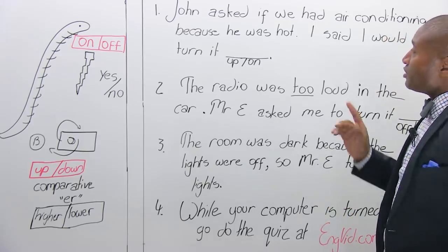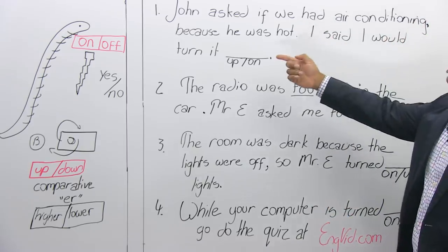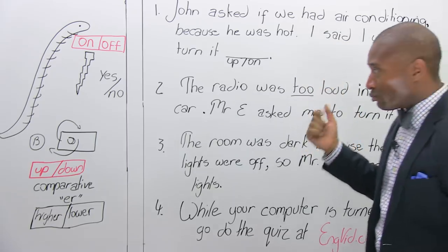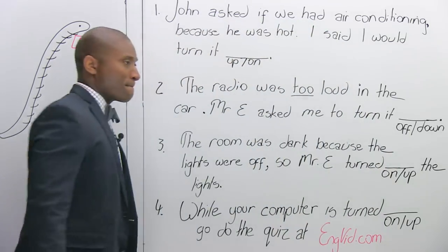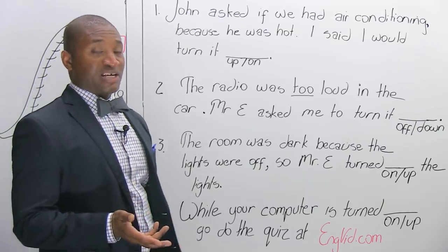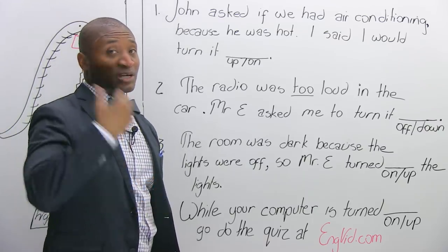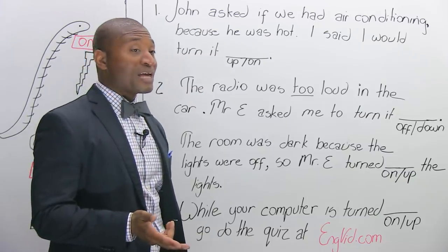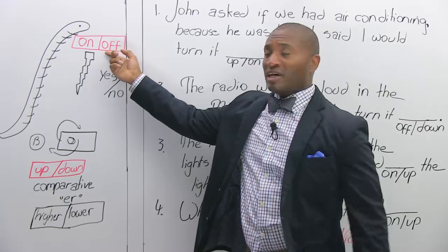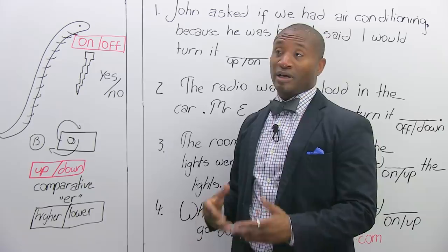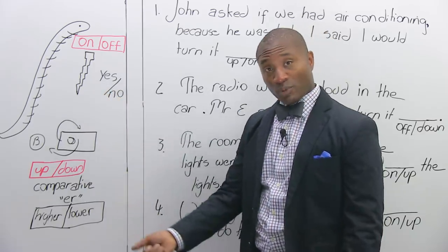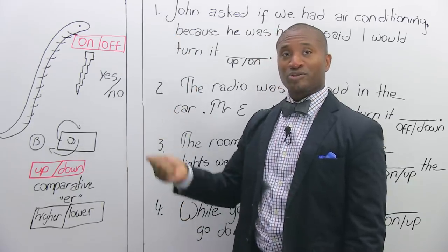First one: John asked if we had air conditioning because he was hot. I said I would turn it... which one? If John is hot and asking if we have air conditioning, probably he cannot hear it or see it, so I would have to turn it on because he was hot. If we had air conditioning working, the room would be cool and he wouldn't have to ask. So we add power to the air conditioning — yes, we want power — I just turned it on.